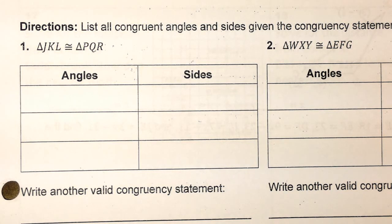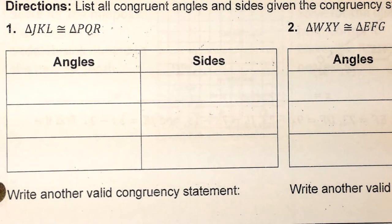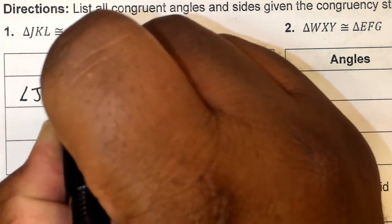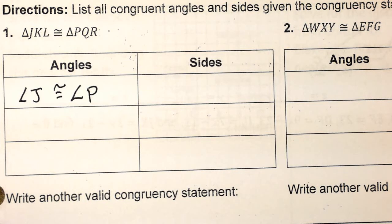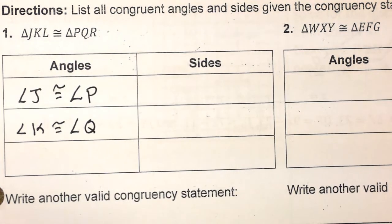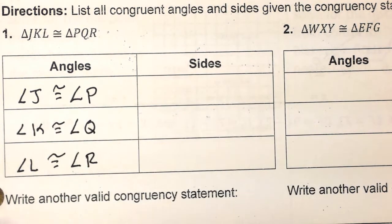Next, list all the congruent angles and sides and give a congruency statement. For numbers one and two, all they give you is a congruency statement — but that's all you need to know what's congruent on two triangles. They don't even need to draw a triangle. Starting with my angles, just looking at the congruency statement I know angle J is congruent to angle P, angle K is congruent to angle Q, and angle L is congruent to angle R. Don't overcomplicate this — you're going to hurt your head if you do.